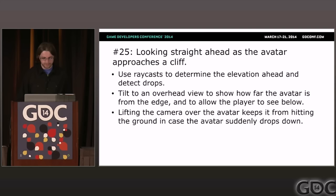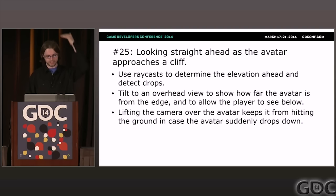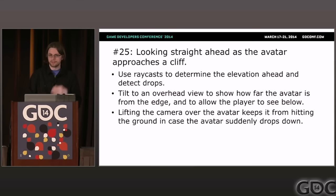Problem twenty-five: looking straight ahead as the avatar approaches a cliff. When people walk towards a ledge, they look down to see what's below, and the camera should do the same. You can cast a downwards ray in front of the avatar to detect any drop, and if detected, the camera can rotate its pitch to swing into a bird's eye view. An additional benefit: the camera is then ready to get out of the way if the player falls, slipping over the edge rather than crashing into the cliff.